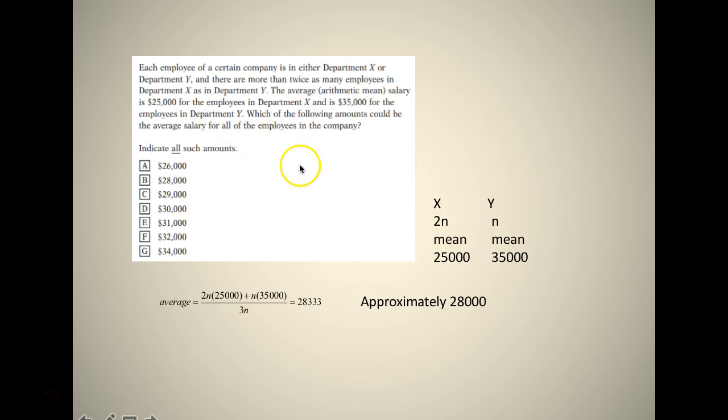Coming to a problem based on this: each employee of a certain company is in either department X or department Y, and there are more than twice as many employees in department X as in department Y. The average arithmetic mean salary is $25,000 for the employees in department X and $35,000 for the employees in department Y. Which of the following amounts could be the average salary for all the employees in the company? Indicate all such amounts.